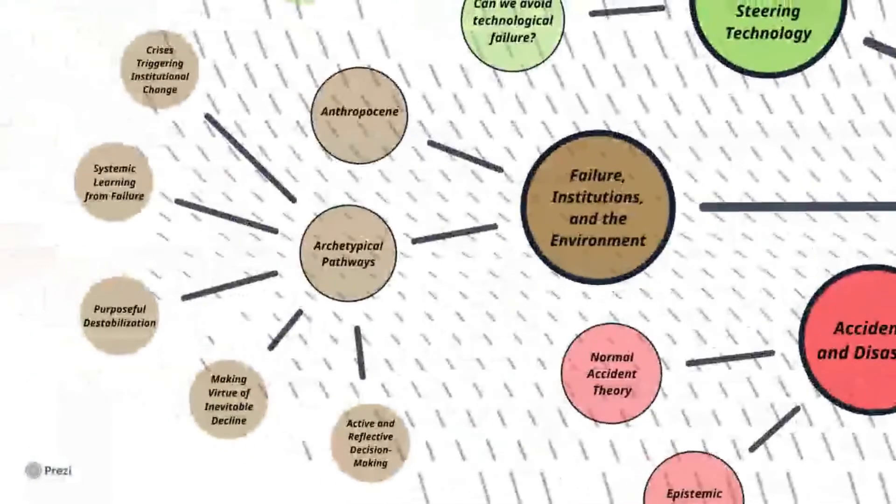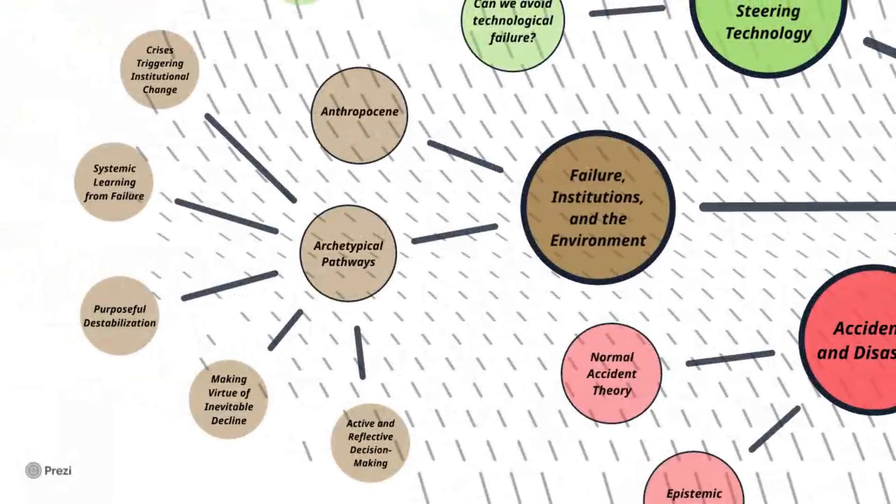Next, we move on to failure in institutions and the environment, where we began by exploring this concept of the Anthropocene, which is the era where humans have become the most impactful species on Earth. And recognizing that our actions have this level of impact is the first step to addressing the causes of climate change. We also investigated the five archetypical pathways, each of which provided some method for improving technology at the institutional level, with a focus on sustainability.